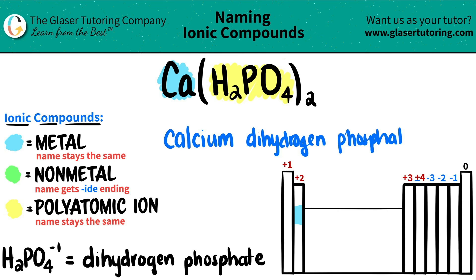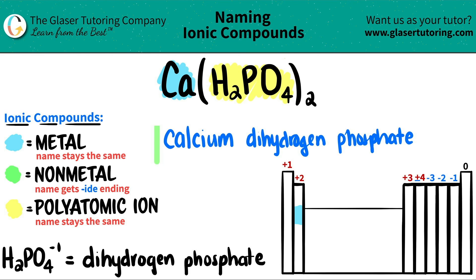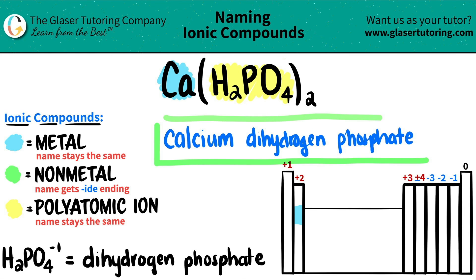Long name here. Since it's ionic, just make sure — do we need a Roman numeral? But the metal here is not a transition metal, so we do not need a Roman numeral. So we are done. CaH2PO42 is just calcium dihydrogen phosphate.